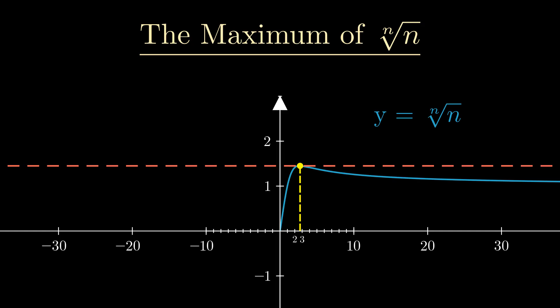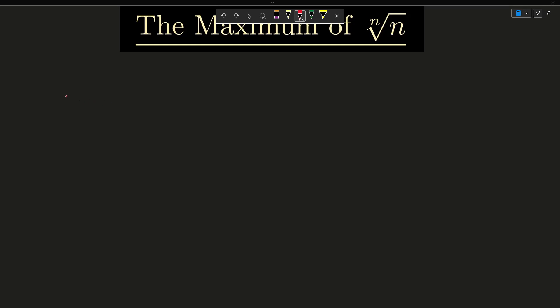Hmm, I wonder what important value lies between 2 and 3 that we seem to see everywhere. Anyway, with this starting hint, we can begin the proof. Okay, we're gonna start this proof by setting y equal to the nth root of n. We're just going to change that actually to y equals the x root of x, since people are more familiar with x.